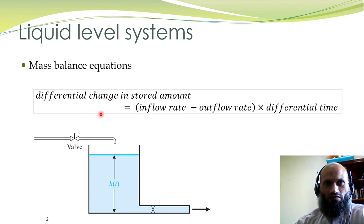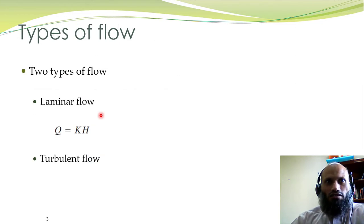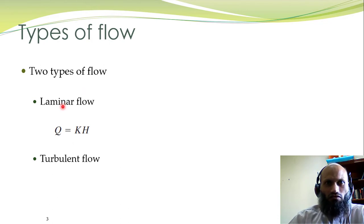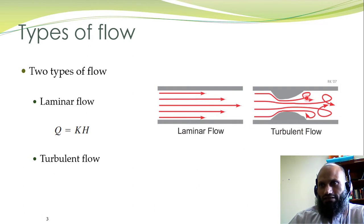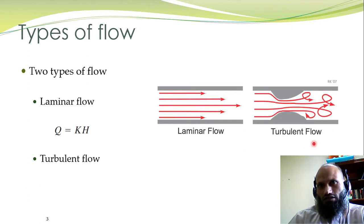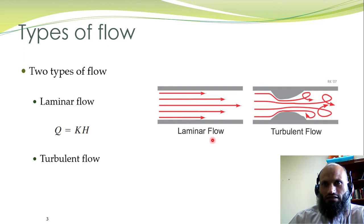In liquid level systems there are basically two types of flow: laminar flow and turbulent flow. In laminar flow, liquid particles move in the same direction as the flow of the liquid. In turbulent flow, the particles have a different direction of displacement than that of the fluid flow. Generally, if the head or level of the liquid is very high, or if there is an obstruction, the flow is turbulent. For low heads and low levels, the flow is laminar.